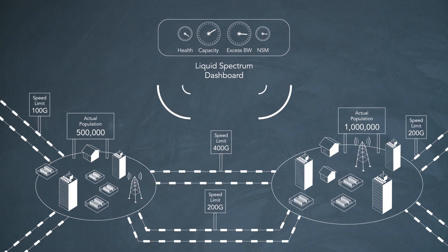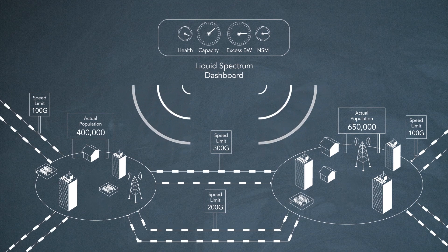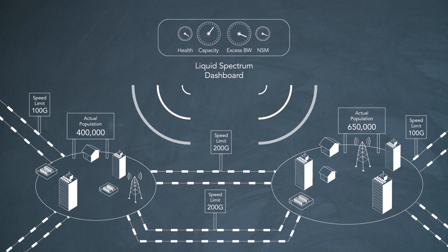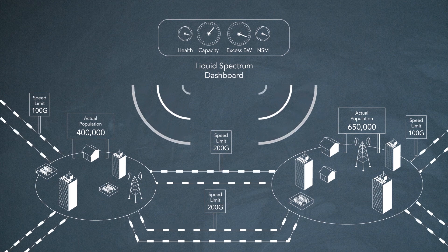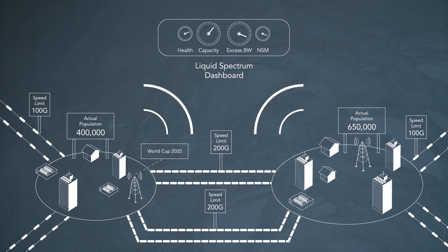When used dynamically, Liquid Spectrum helps operators achieve their business goals by providing new levels of visibility into network resources and flexibly allocating resources such as margin and capacity programmatically using pre-assigned service policies and no manual intervention.